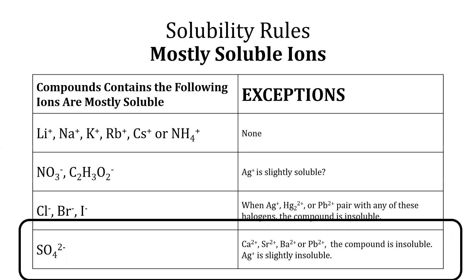Salts of sulfate ions are mostly soluble unless paired with calcium ion, strontium ion, barium ion, or lead(II) ion, which are insoluble. Silver ion is slightly insoluble in water when paired with sulfate ion.